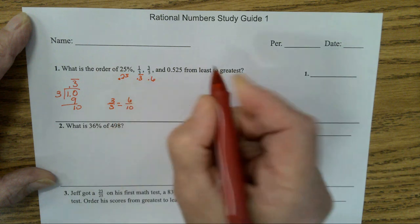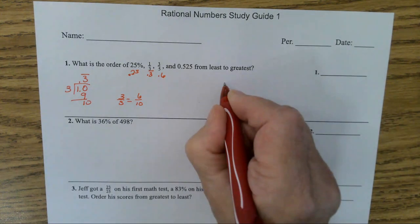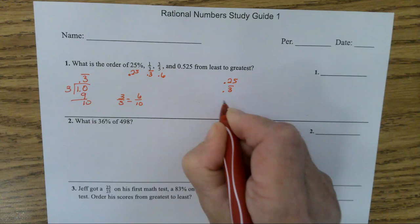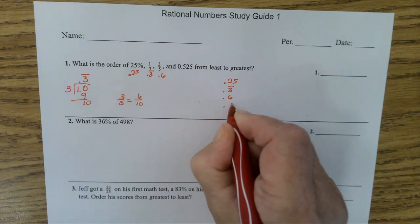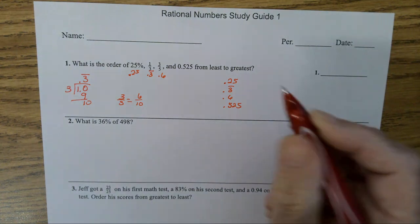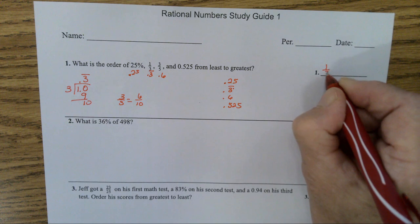Three-fifths - well five is a factor of ten - is 6/10, so that's 0.6. And then you have 0.525. So if I line these up: 0.25, 0.3 repeating, 0.6, 0.525. The smallest one is this one, 0.3 repeating, so 1/3 is the smallest.